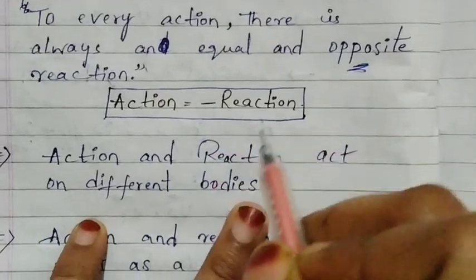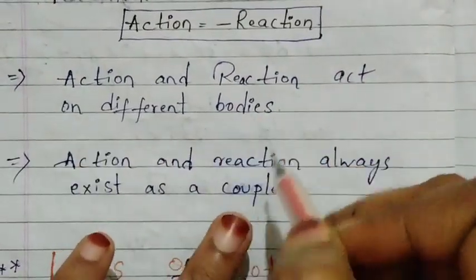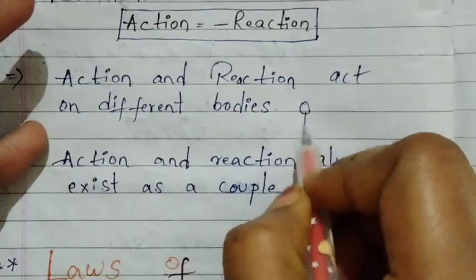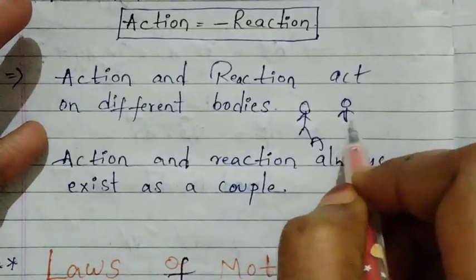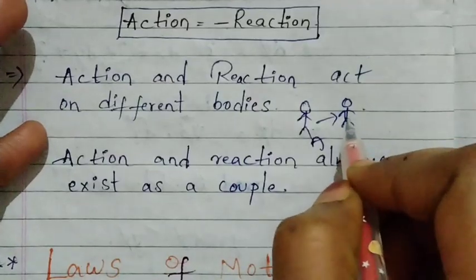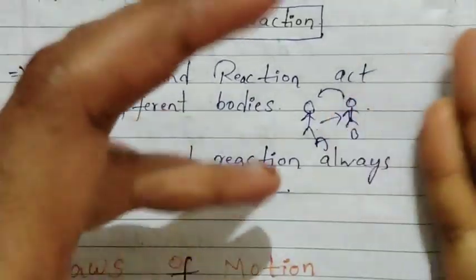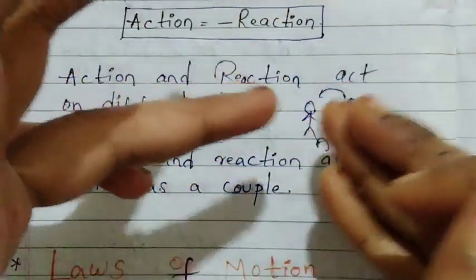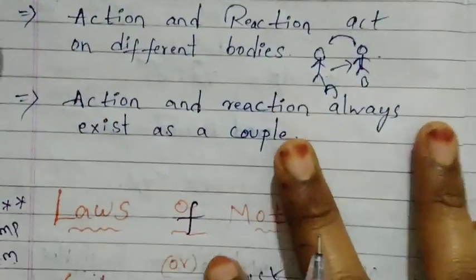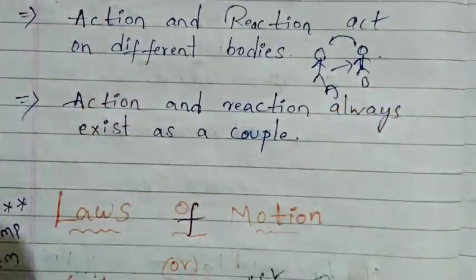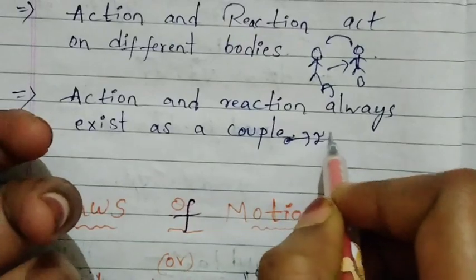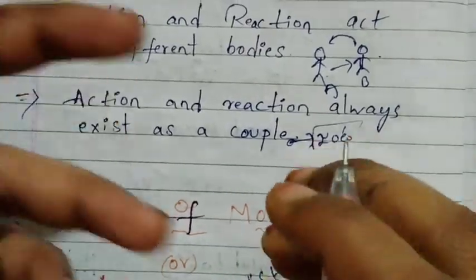Action and reaction act on different bodies — two different bodies. For example, consider two persons: person A pushes person B, so A exerts an action force on B and B exerts a reaction force back on A. They act as a cooperative pair. Action and reaction always exist as a couple.